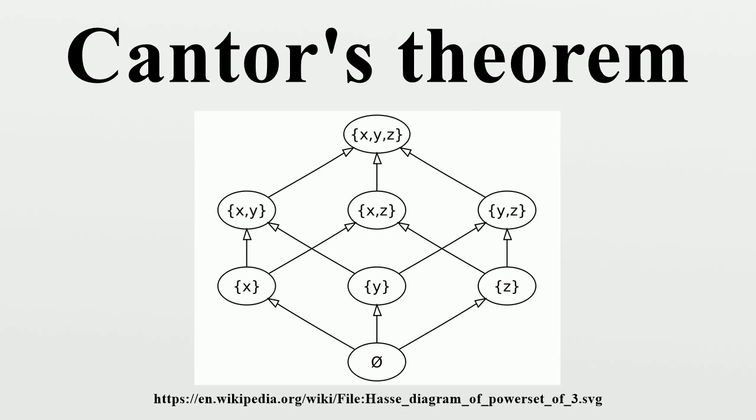Through this proof by contradiction we have proven that the cardinality of N and P(N) cannot be equal. We also know that the cardinality of P(N) cannot be less than the cardinality of N because P(N) contains all singletons, by definition. And these singletons form a copy of N inside of P(N).